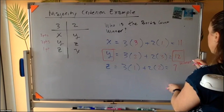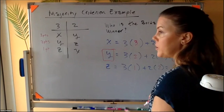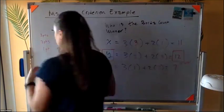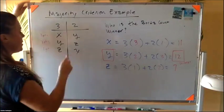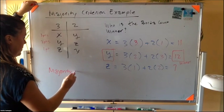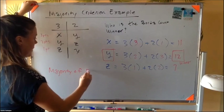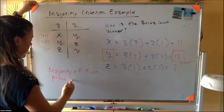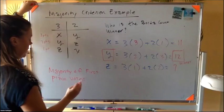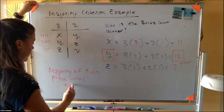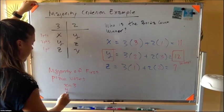So Y is kind of now celebrating, popping the champagne, saying, great, I won. But what about this? So who has the majority of first place votes? So X has, X equals three and Y equals two.